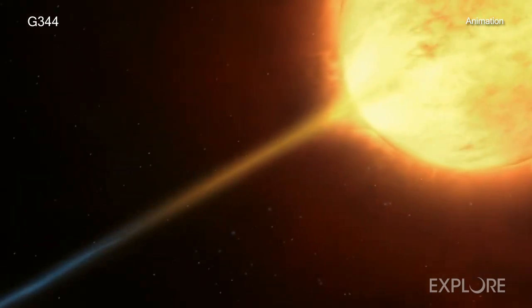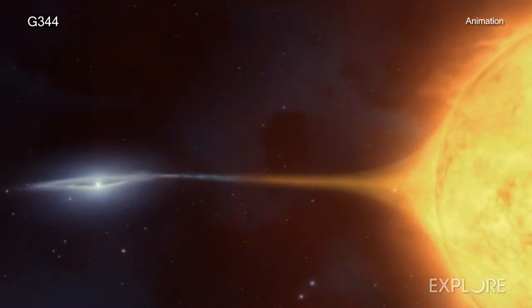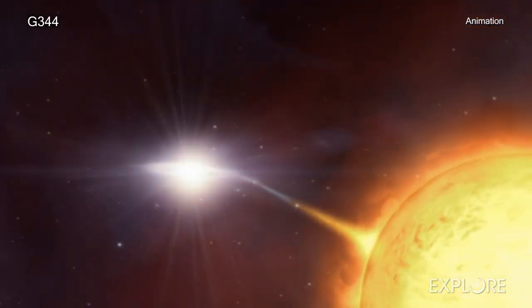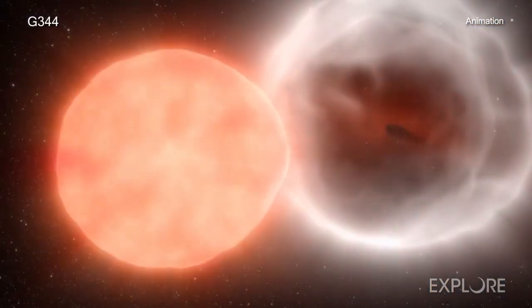If the companion's orbit brings it too close, the white dwarf can pull material from it until the white dwarf grows so much that it becomes unstable and explodes. This kind of stellar blast is called a Type Ia supernova.